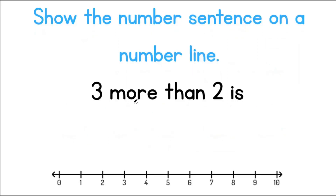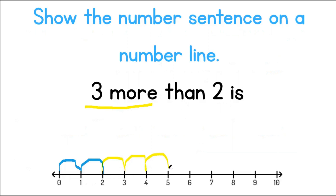Show the number sentence on a number line. Here we are saying three more than two is. So we've got to start at two: one, two. And then we've got to add on three more: one, two, three. What is our answer? Our answer is the number five.